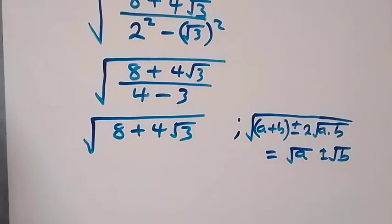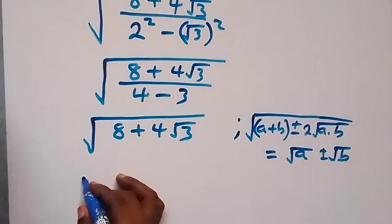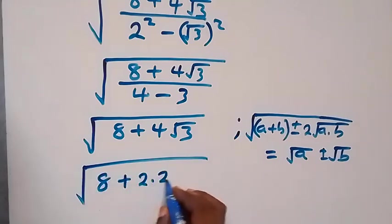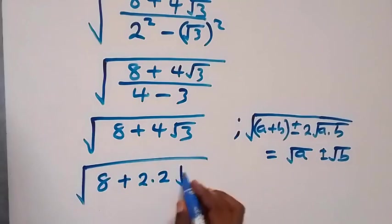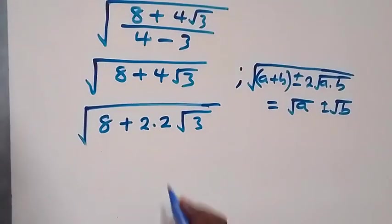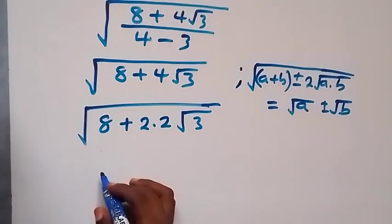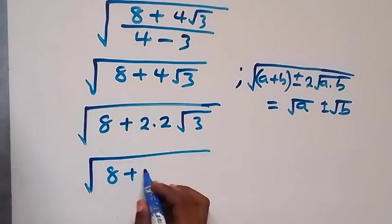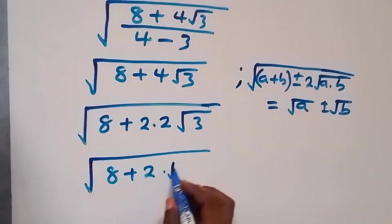Then we can write this again as root 8 plus 2 times 2. We have 4 as 2 times 2, then root 8 plus 3. And also from here, this 2 we can write it again as root 4, that is root 8 plus 2 then times root 4.